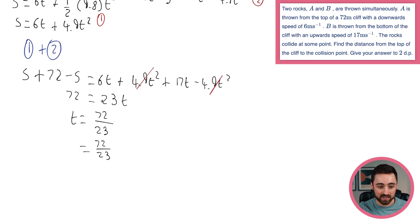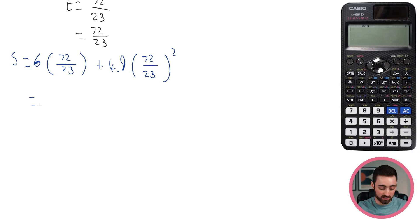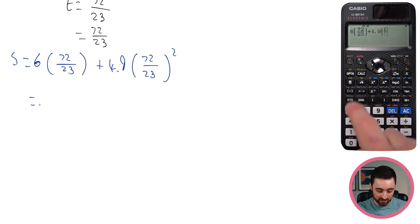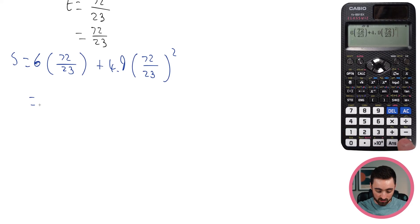Therefore, this distance that I'm after, this S, is going to equal 6 times T, so 72 over 23, plus 4.9 T squared, so 72 over 23 squared. Stick it in your calculator, and I believe that'll do it. So get it out, and I'm going to do 6 multiplied by 72 over 23, plus 4.9 multiplied by 72 over 23, all squared.